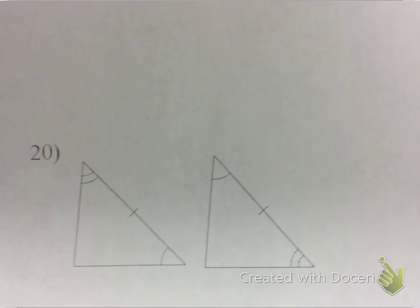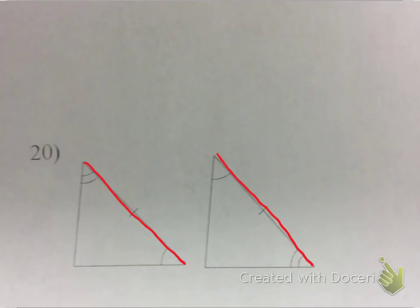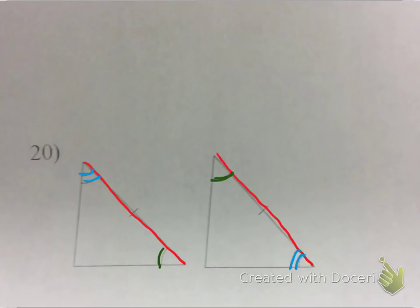Next up, we have a case of ASA. I know that this side is congruent to this side. The picture is already marked with the angles — I know that this angle on the top is congruent to this angle on the bottom, and I know that this angle on the bottom left is congruent to this angle. So even though the blue and the green angles switched positions, I still have in both triangles two congruent angles and the side in between them. That's the criteria I need, so this particular one is angle side angle.